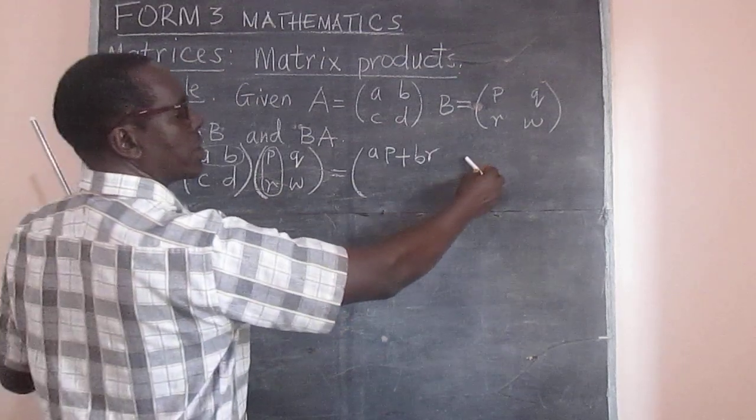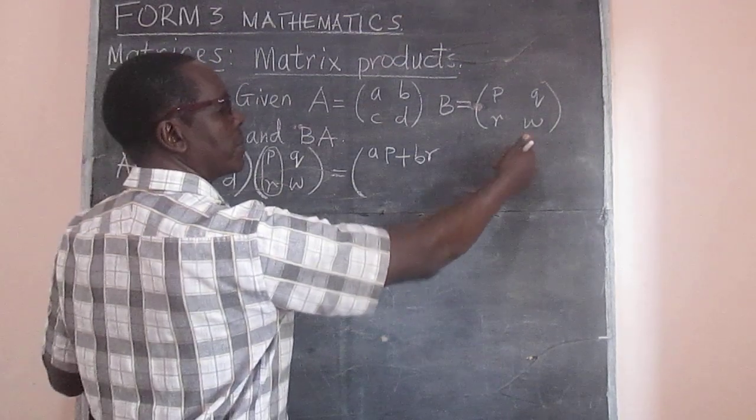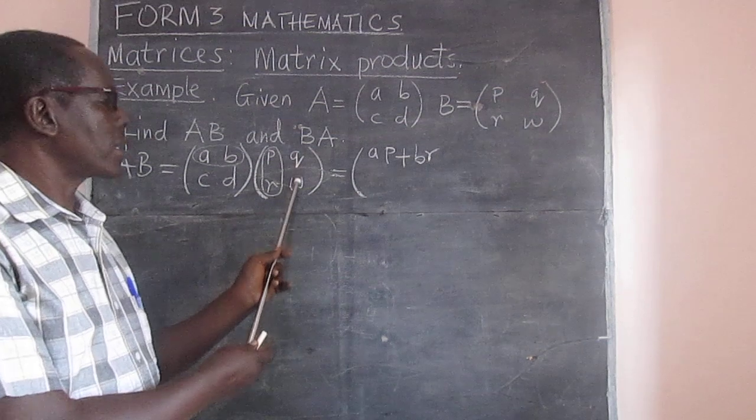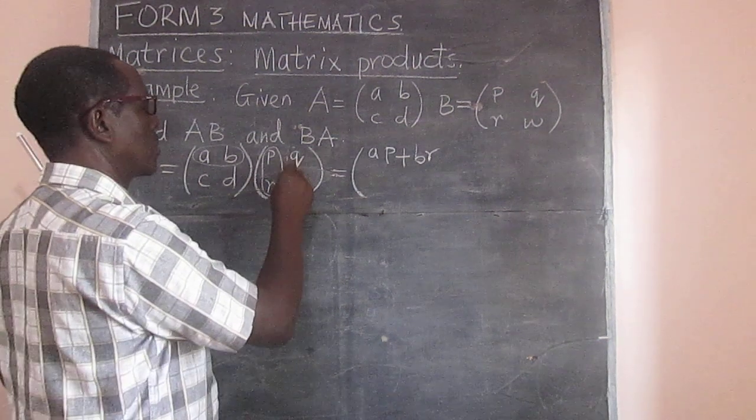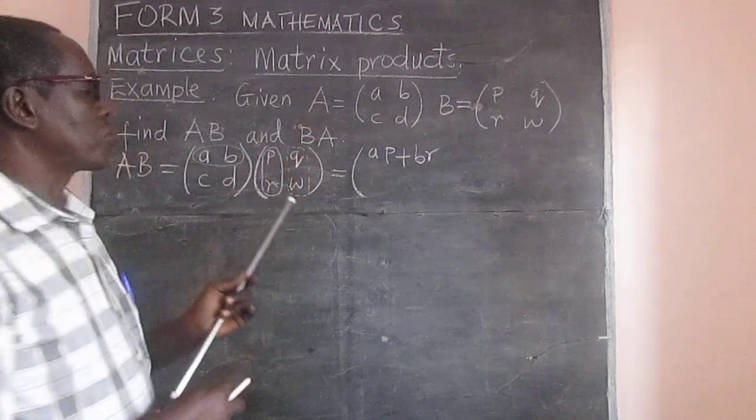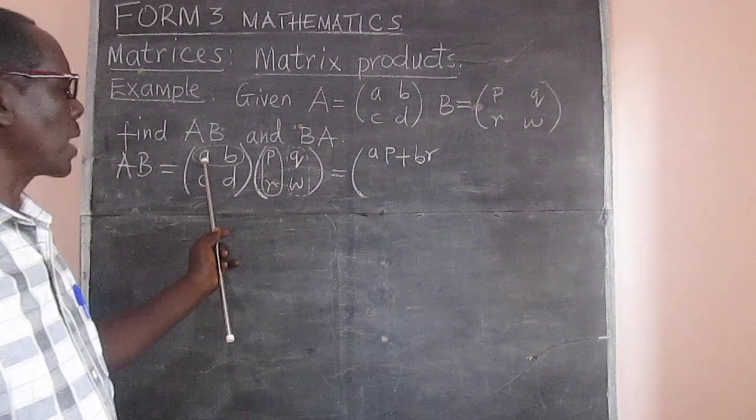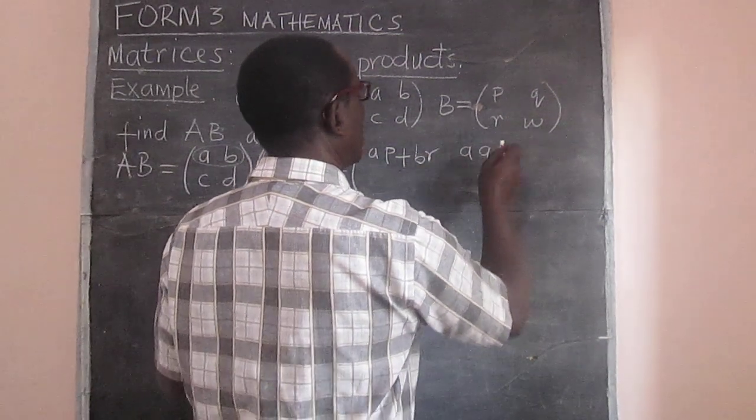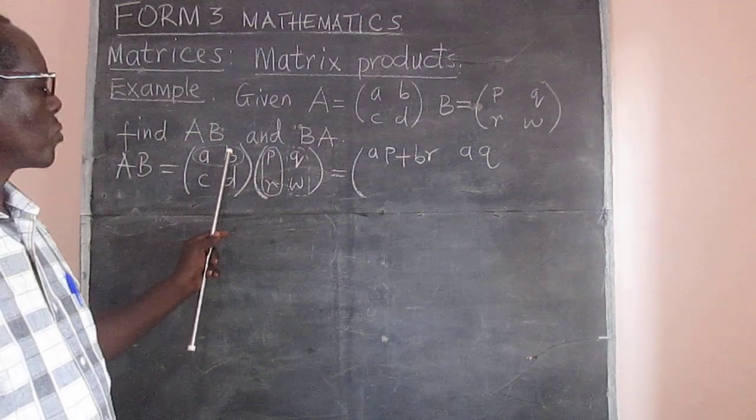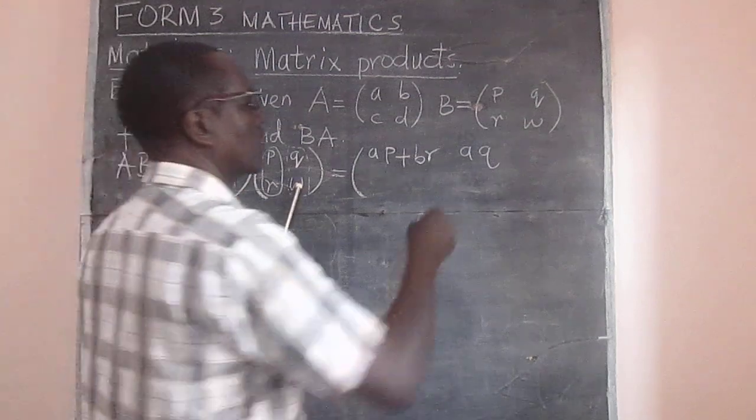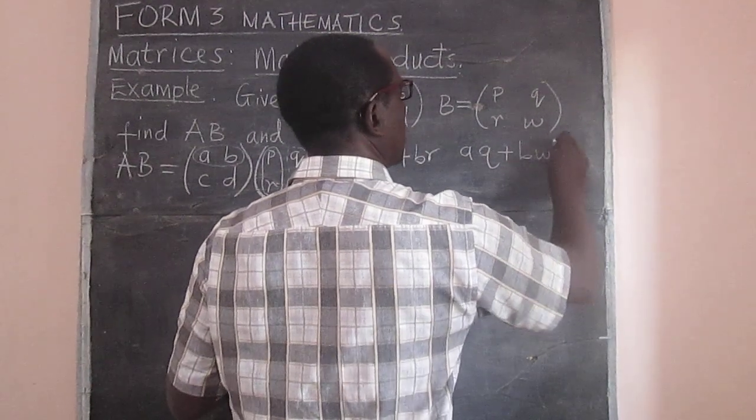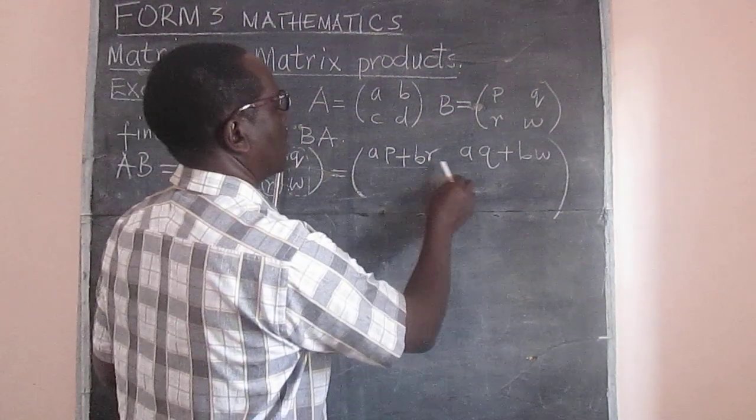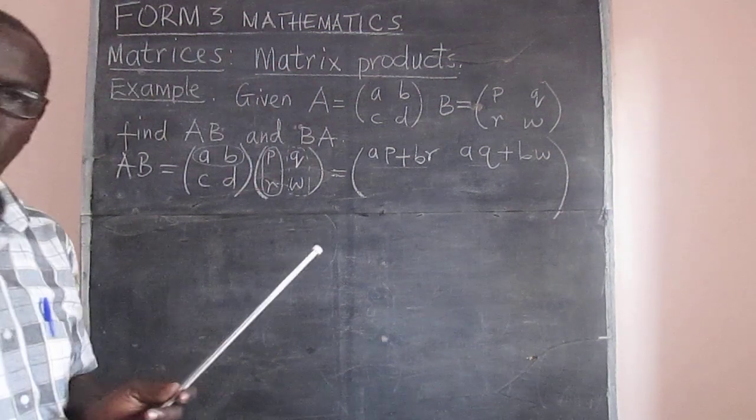Now if you would like to get the other element here, then we need to take the same row and multiply by the second column. And therefore we can do that so that we see now the difference. And again we are going to multiply A by Q which gives us AQ, and then we are going to add to B multiplied by W. And therefore we have plus BW.